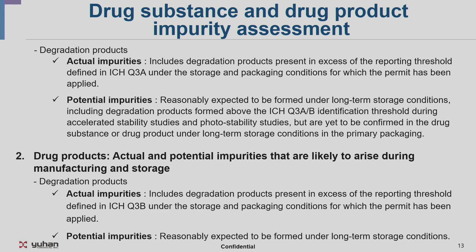For degradation products, actual impurities include those present in excess of the reporting threshold defined in ICH Q3A. Potential impurities are those expected to be formed under long-term storage conditions, including degradation products. These need to include substances formed under long-term storage in the primary packaging. For drug product, actual and potential impurities likely to arise during manufacturing and storage also need to be assessed.